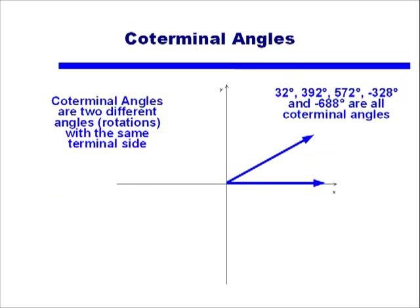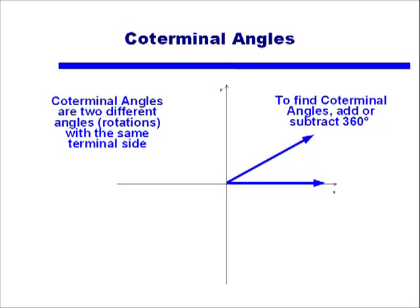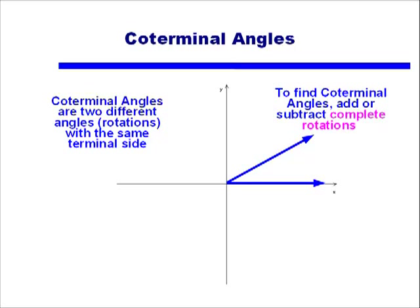This is a slide from a previous lecture. We talked about how coterminal angles are two different angles, that is two different rotations, that share the same terminal side. And we found several angles that were coterminal. For instance, 32 degrees, 572 degrees, and negative 688 degrees are all coterminal angles. To find these coterminal angles, we simply added or subtracted 360 degrees. Or in other words, we added or subtracted complete rotations.